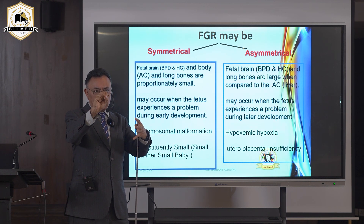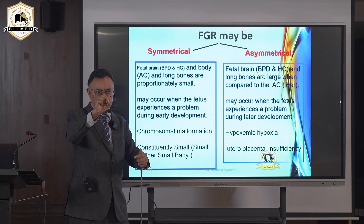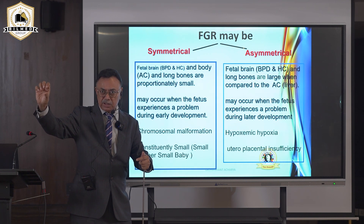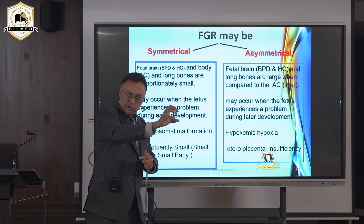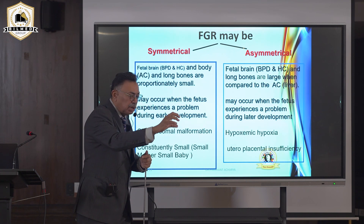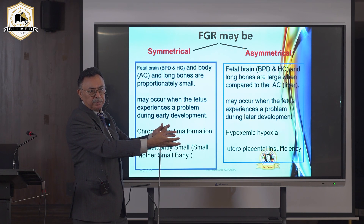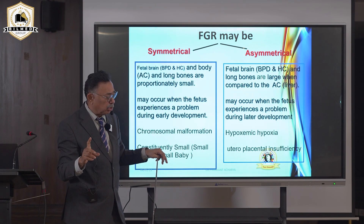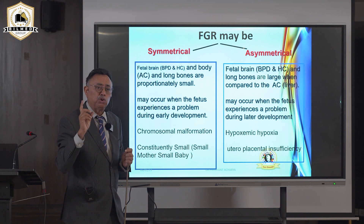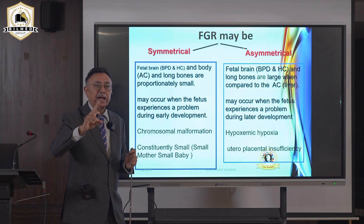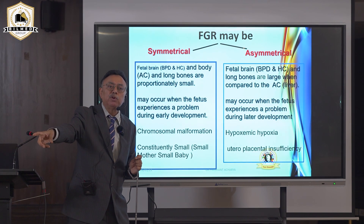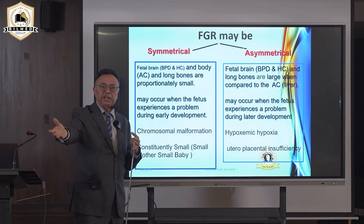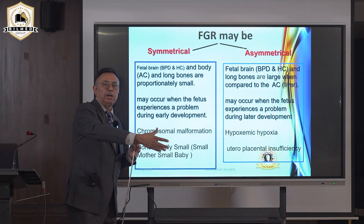Asymmetrical FGR occurs when the placenta has not properly invaded the spiral arteries, which remain constricted with resistance still above 0.7. The uterine artery resistance stays elevated, so less blood is delivered. This late-onset growth retardation due to uteroplacental insufficiency can be detected by Doppler of the uterine artery on the maternal side and the umbilical artery on the fetal side of the placenta.